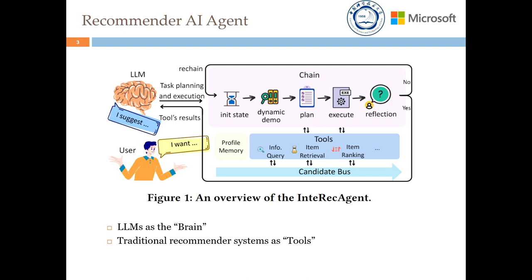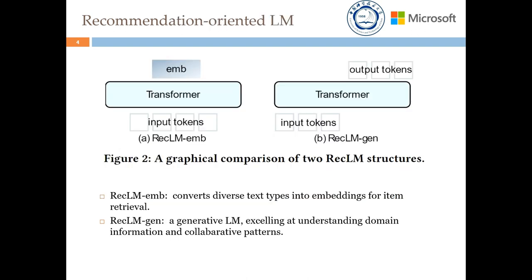The second pillar of our work is recommendation-oriented language models. We introduce two types of models: REC-LM-EMB and REC-LM-GEN. REC-LM-EMB converts diverse text types such as natural conversations and unstructured attributes into embeddings for item retrieval. REC-LM-GEN is a generative language model that, after fine-tuning with in-domain data, excels at understanding domain information and collaborative patterns.